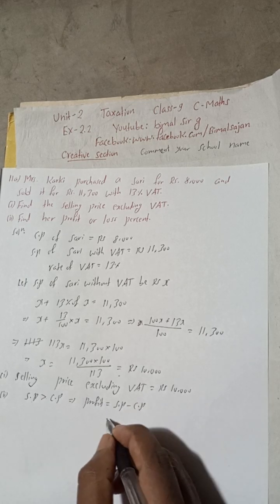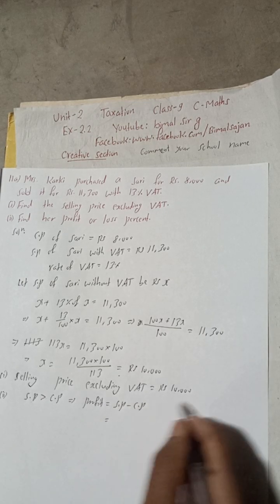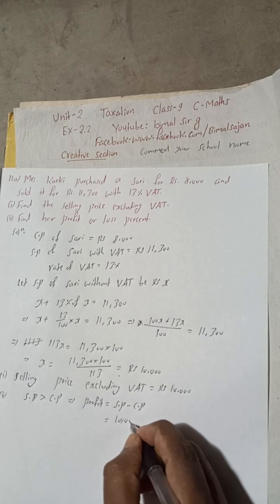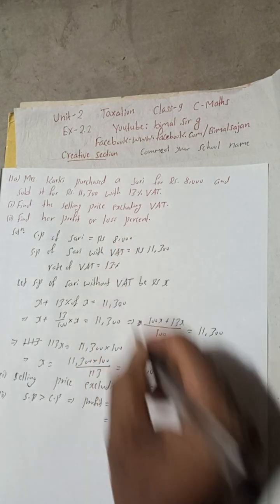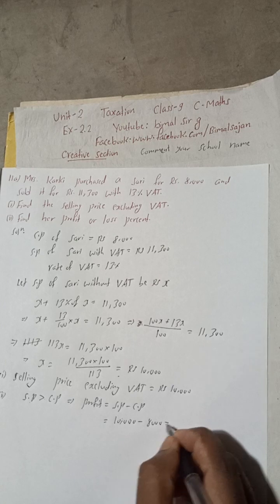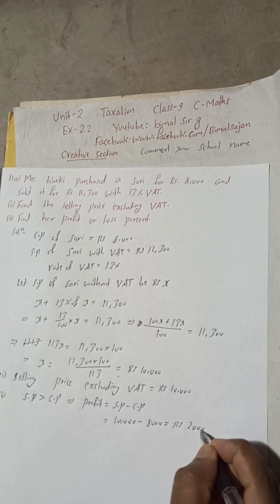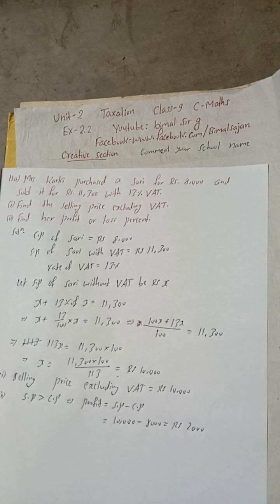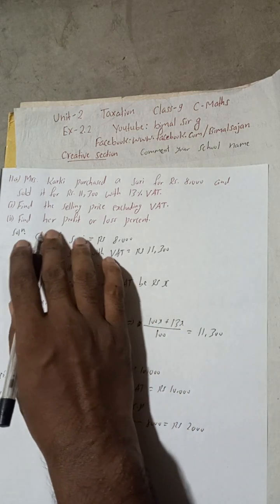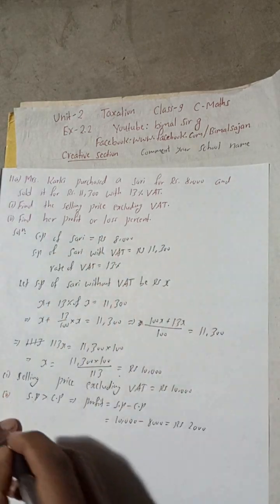SP minus CP. So here SP we have to take 10,000 minus CP is 8,000. So this is equal to Rs. 2,000 is the profit. But the question asks to find her profit or loss percent. So therefore, there is profit.